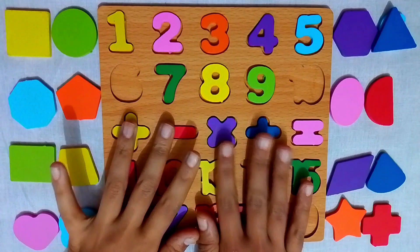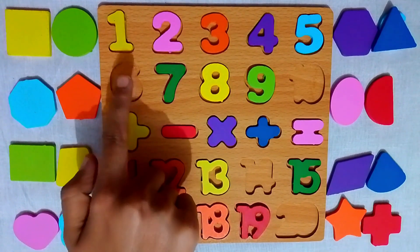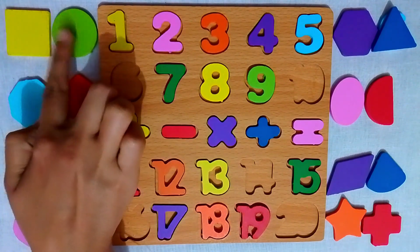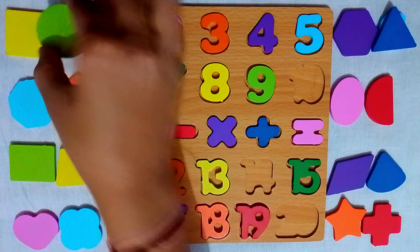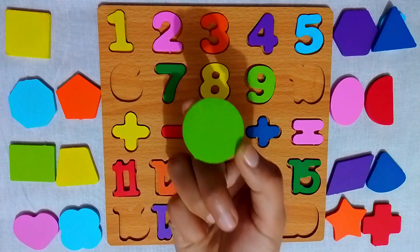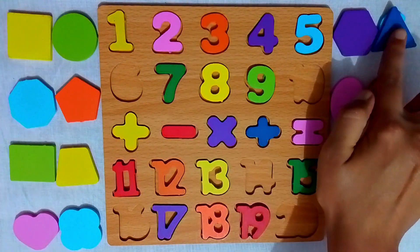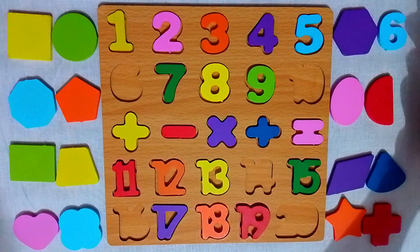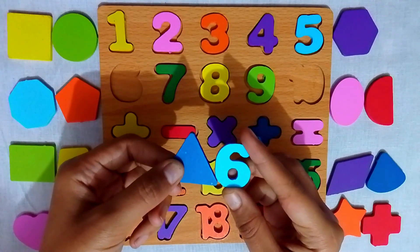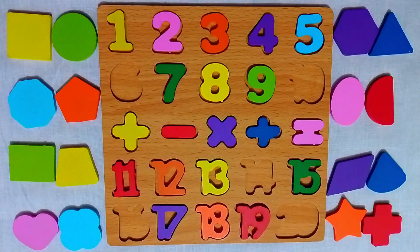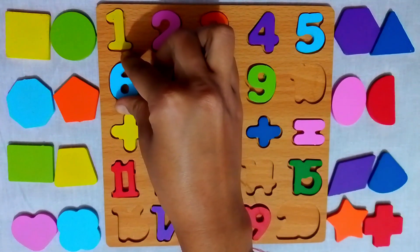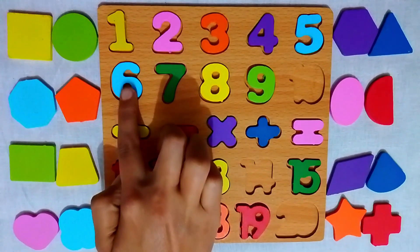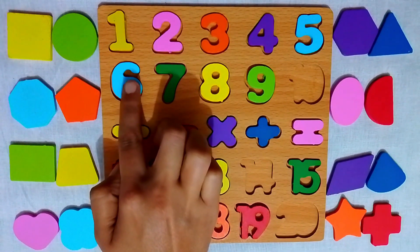Let's look for number 6. Maybe inside the circle. Let's check. Oh no, it's empty. Maybe in the triangle. Yay! We found number 6. Now let's place number 6 back in its correct spot. Here it goes, between 5 and 7. Perfect.